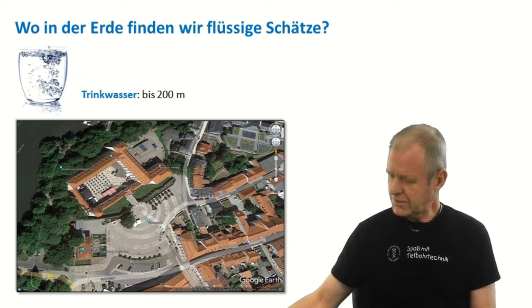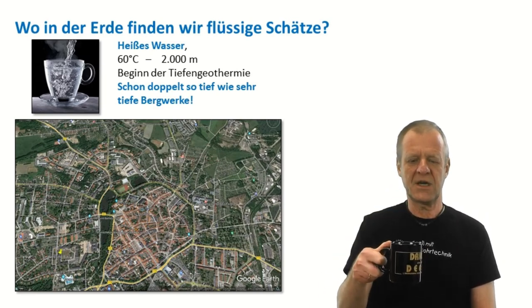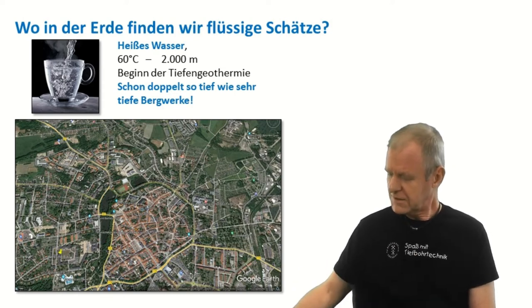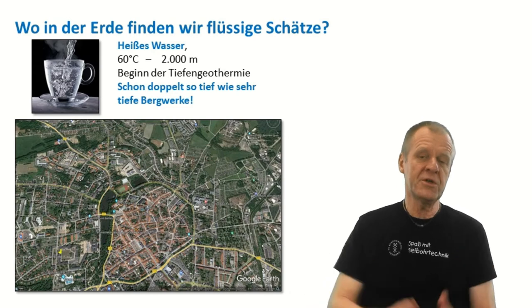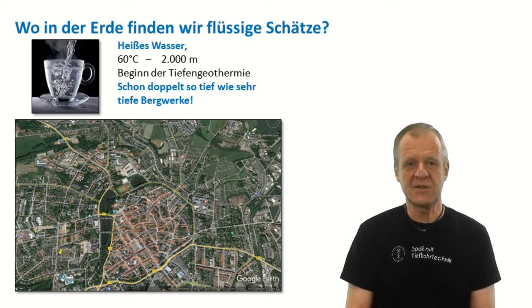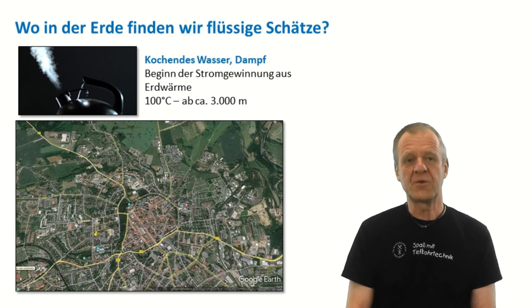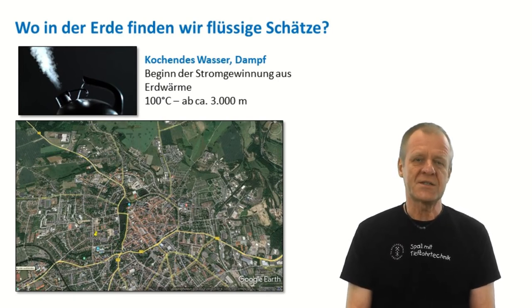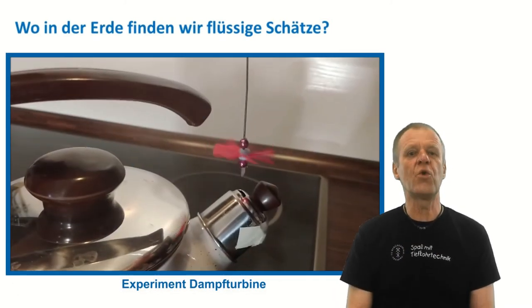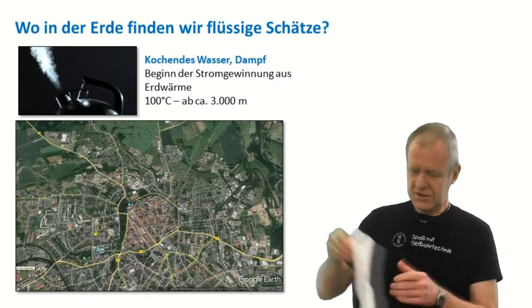But it is getting warmer. At about 2 kilometers deep, the water is already so hot that you could make coffee or tea with it. However, we can use the hot water for heating — for example, for heating buildings or swimming pools. If we can use the hot water directly for heating purposes without a heat pump, then we are talking about deep geothermal energy. Deep geothermal energy starts at depths of 2 or more kilometers. If we go even further down into the Earth, let's say at 3 kilometers depth, the water in the pores of the rock is already so hot that it boils if we bring it up to the surface. This means that we can get steam out of the ground and use it to generate electricity — an important application of deep geothermal energy.